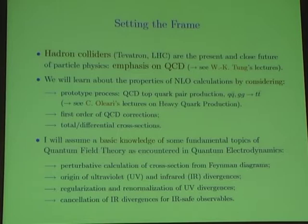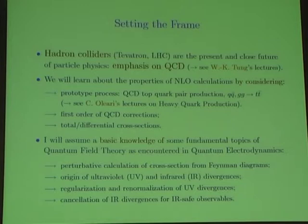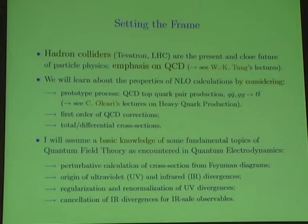We will learn about the properties of the calculation first in general, and along the way I will use a sort of prototype example. The prototype example I decided to use is the hadronic production of top pairs. The reason for that is that it's a 2-to-2 process, so relatively kinematically simple and fully hadronic. Also, I'm going to give a third lecture on top physics, so I picked an example that will be meaningful to that lecture.